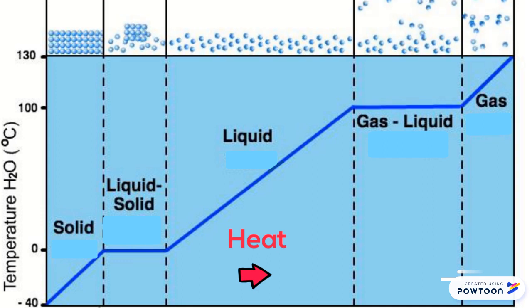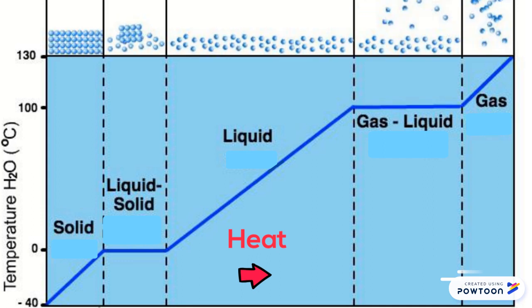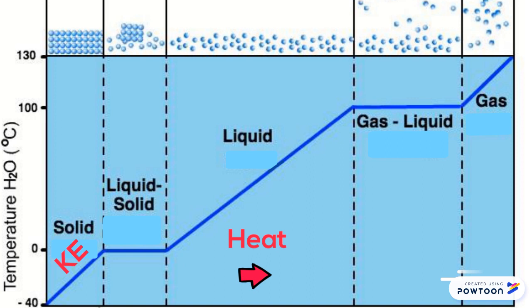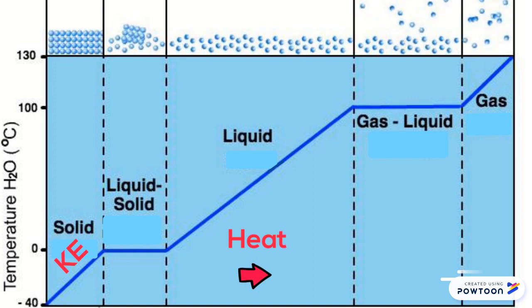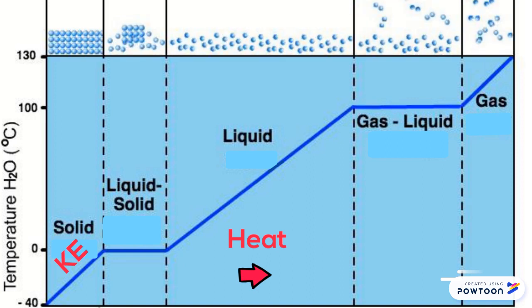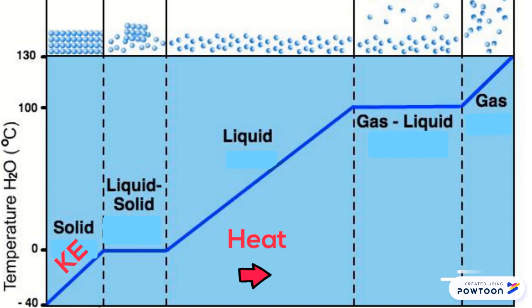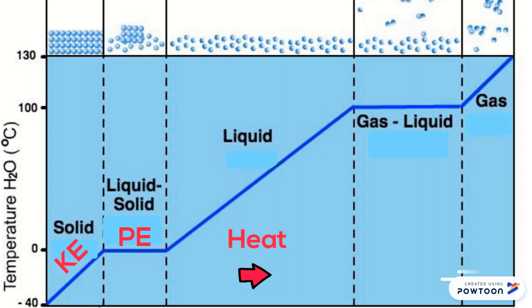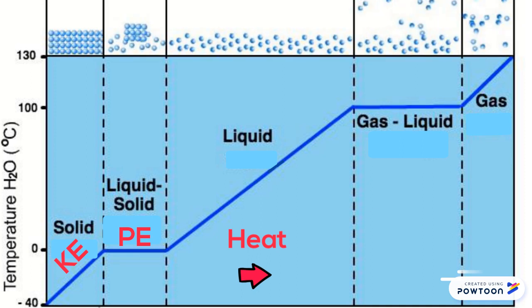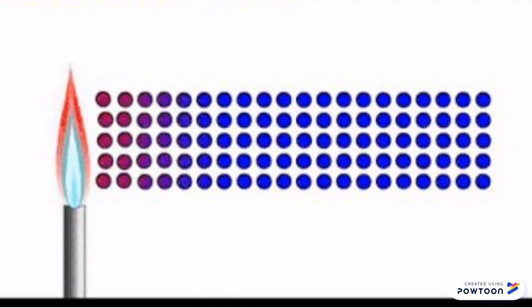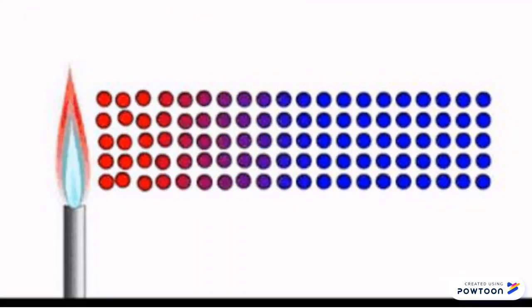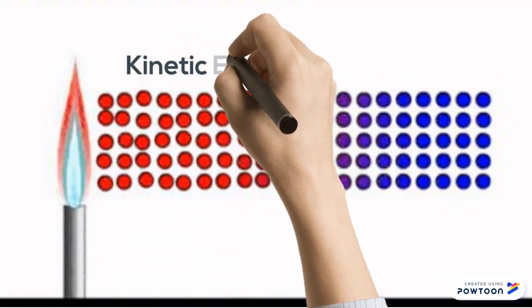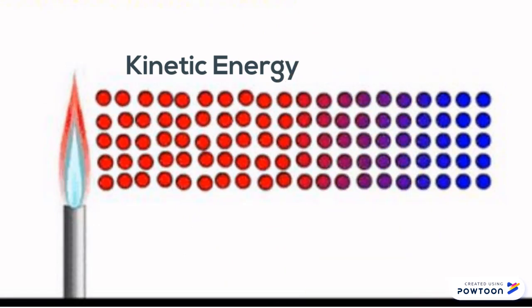The first leg of the graph has kinetic energy — as the temperature goes up, the particles speed up. On the second leg of the graph, there's potential energy. The particles aren't speeding up; they're changing position. These particles are starting to move faster and faster, so they're gaining kinetic energy.